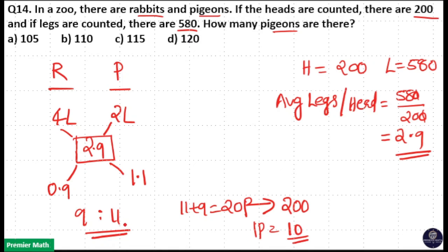If 1 part is equal to 10, the number of pigeons is equal to 11 parts. So, 11 parts will become 110. And 9 parts will become 90. So, your answer is option B.